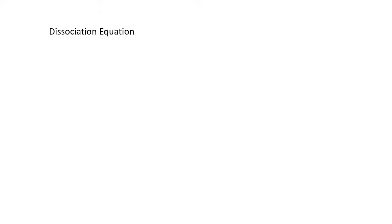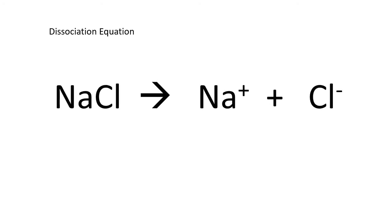We can use our chemical shorthand to write a brief description of what happens there, a simple little equation. Our sodium chloride NaCl breaks up into separate positive sodium ions and negative chloride ions.